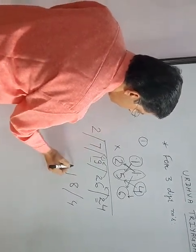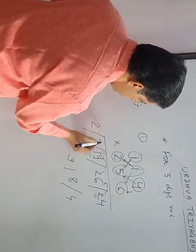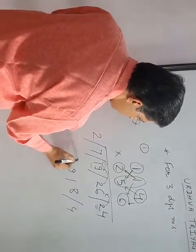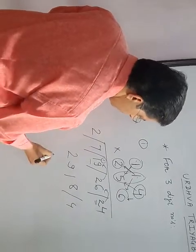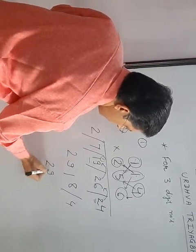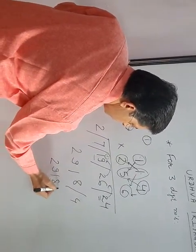7 plus 2 is 9. 9 and the last one is 2. Answer is 29184.